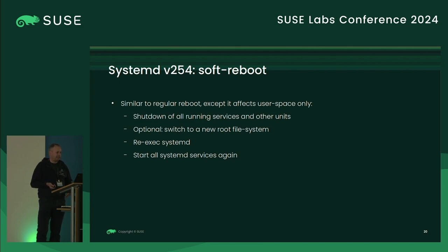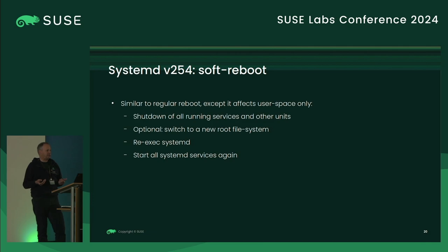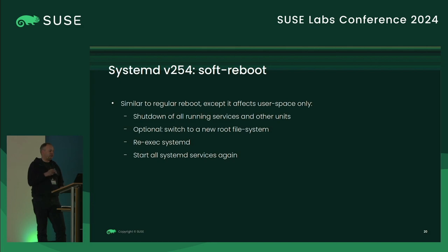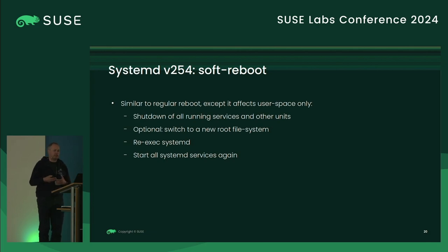Soft reboot restarts only the user space, not the kernel. We shut down all running services normally, like with a normal reboot or shutdown. Optionally you can switch the root file system — if you use AB partitioning or with our transactional update, different Btrfs subvolumes as root file system, you can switch this. Then systemd PID 1 will re-exec itself — it's really the new systemd started from the new root file system — and like in the normal boot process, all services will be started again.